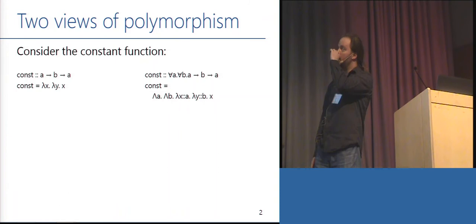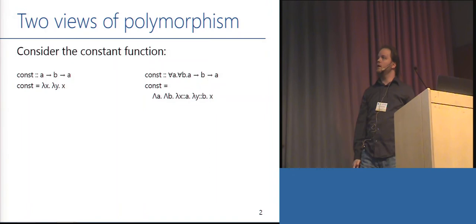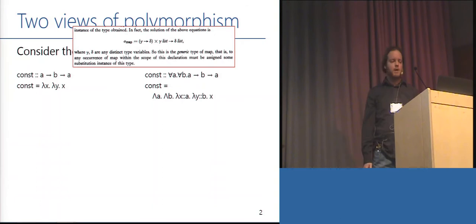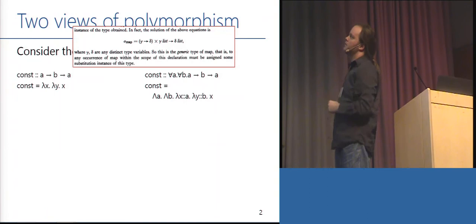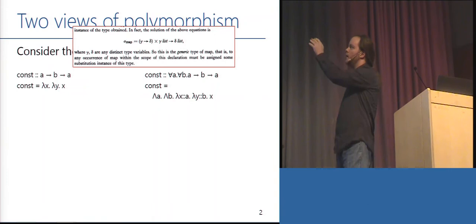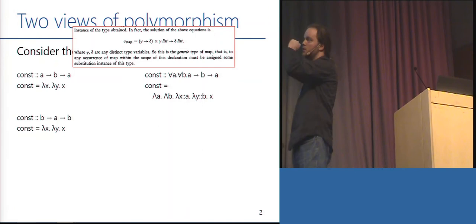We have explicit type abstraction and type annotation. The question is: is this the only interpretation of the implicitly typed thing? Is this precisely the interpretation we should have? I want to bring up this paper that said, when introducing ML-style implicit polymorphism, a type signature means that any occurrence of map within the scope of this declaration must be assigned some substitution instance of this type, rather than being defined in terms of explicit type abstraction and application. So everything that's a substitution instance of A to B to A is also a substitution instance of B to A to B.